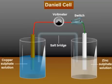Now as soon as the switch is closed to complete the circuit, current starts flowing from copper electrode to the zinc electrode and that can be confirmed by the deflection of needle in the voltmeter.